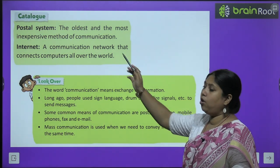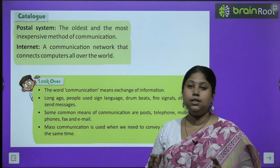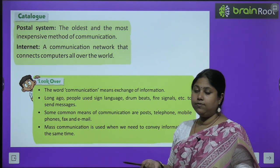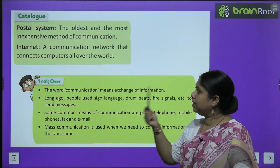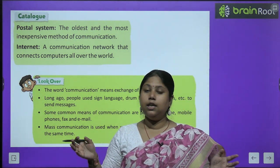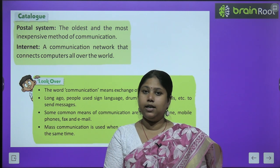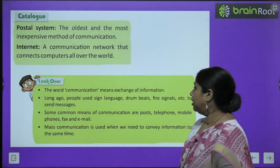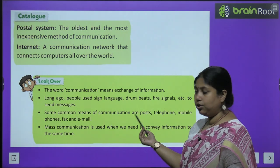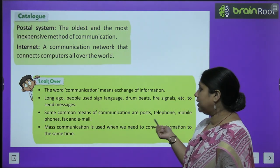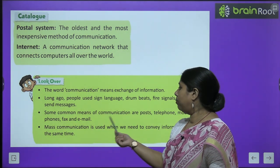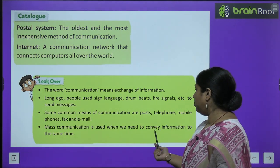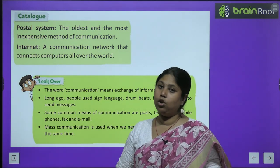Now let's quickly read the important terms from this chapter. Postal service: the oldest and most inexpensive method of communication. Internet: a communication network that connects computers all over the world. The word communication means exchange of information. Long ago people used sign language, drum beats, fire signals, etc. to send messages. Some common means of communication are posts, telephones, mobile phones, fax and email. Mass communication is used when we need to convey information to a large number of people at the same time.